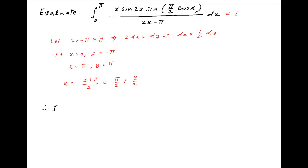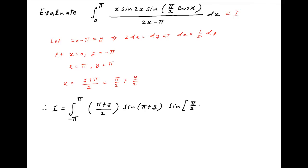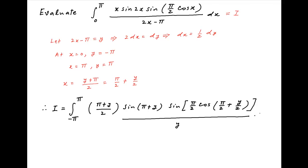Therefore I is equal to the integral with y going from minus π to π. Replacing all x with (y + π)/2, the numerator becomes (π + y)/2 times sin(2x), which equals sin(π + y), times sin(π/2)·cos(x), which equals sin(π/2)·cos(π/2 + y/2), divided by 2x minus π, which equals y, and dx is replaced with dy/2.